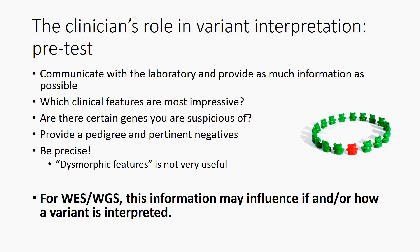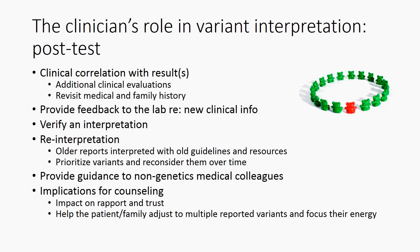Precise descriptions are more useful than general terms like dysmorphic features. For genomic testing, such as exome and genome sequencing, this information may influence if and or how a variant is interpreted. After a variant is reported, the clinical provider continues to have an important role in the clinical interpretation of that variant and how that interpretation is understood by patients, families, and other medical providers.